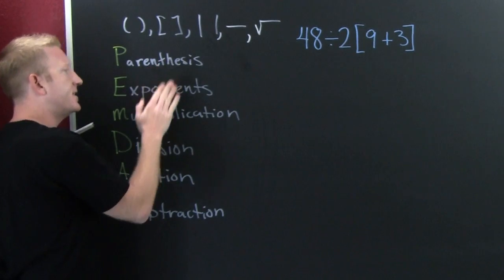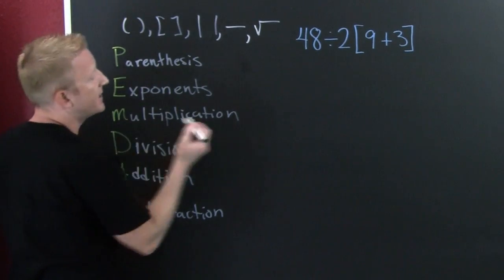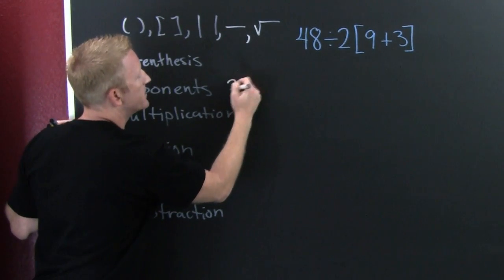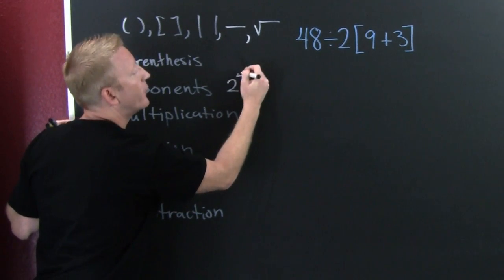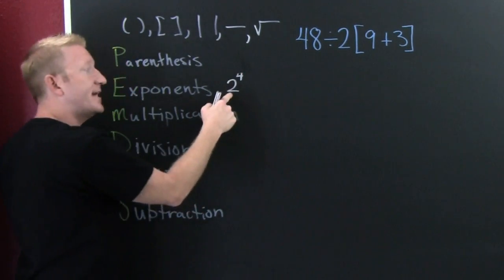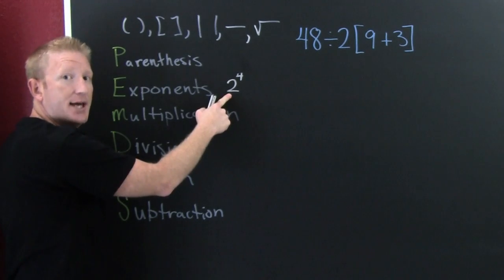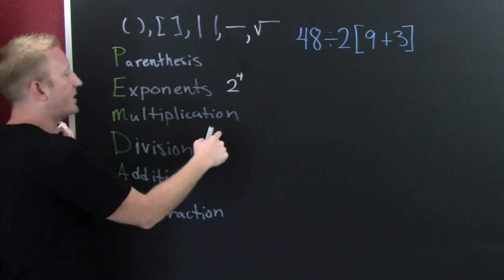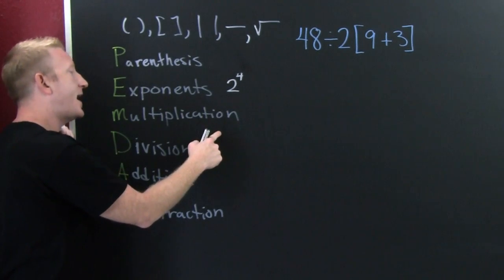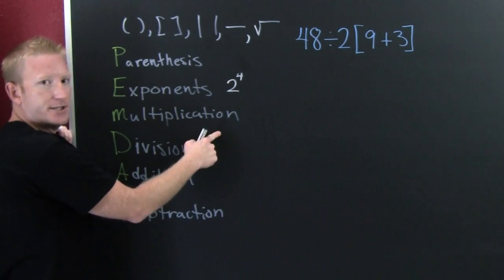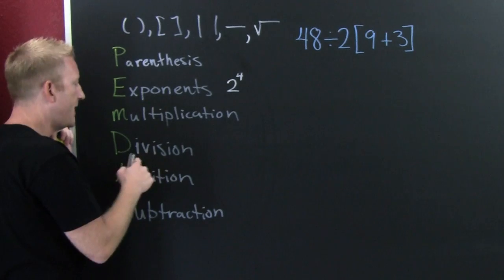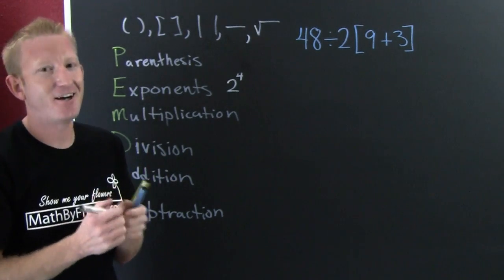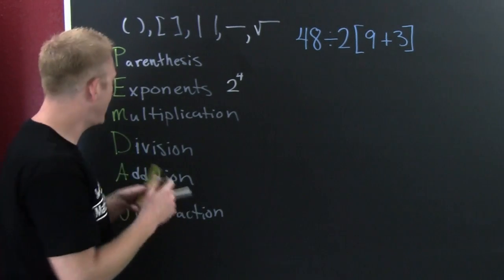Parentheses first, then exponents — like two to the fourth. You'd take care of that first. Then multiplication and division. I need to caution you on these two.